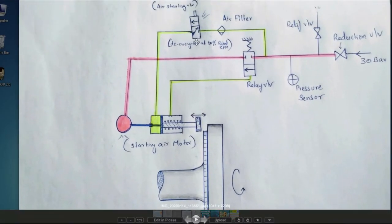So here there is a solenoid valve. This one de-energizes at 10% of the rated RPM. So when generator reaches 10% of the rated RPM, this one de-energizes, and this one will be in this position.